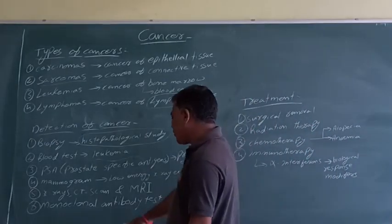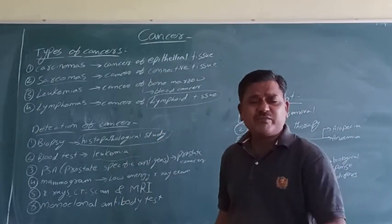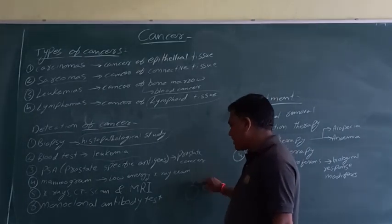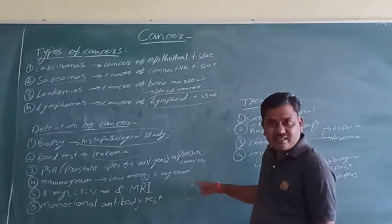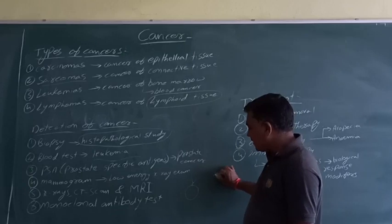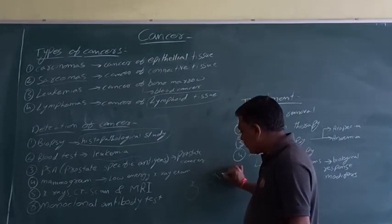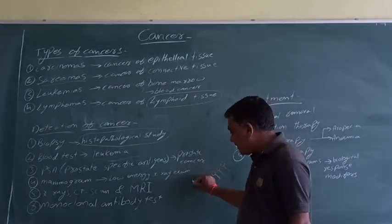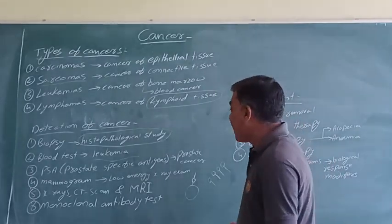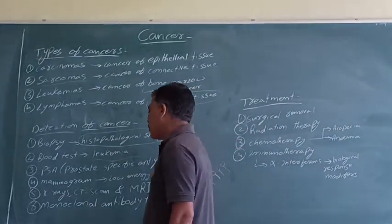The last detection method is use of monoclonal antibodies for detection and diagnosis of cancer. Single type of antibodies — take the example of lung cancer. On the cancerous cell there is a presence of a particular type of antigen. Only one type of monoclonal antibodies is added, so that when it makes attachment with the antigen, it gives confirmation that there is a presence of cancerous cells. Identification of cancerous cells using monoclonal antibodies is called the monoclonal antibody test.